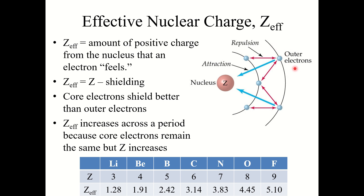Those inner electrons provide shielding for the outer electrons, meaning the more inner electrons you have, the more these outer electrons are shielded from the positive attractive force of the nucleus. Z-effective increases across a period — going left to right — because the core electrons remain the same. For example, lithium through fluorine all have two core electrons (1s²). The core electron count stays the same, but you are increasing Z, increasing the number of protons. So if shielding isn't increasing but the number of protons is, the effective charge increases going left to right.